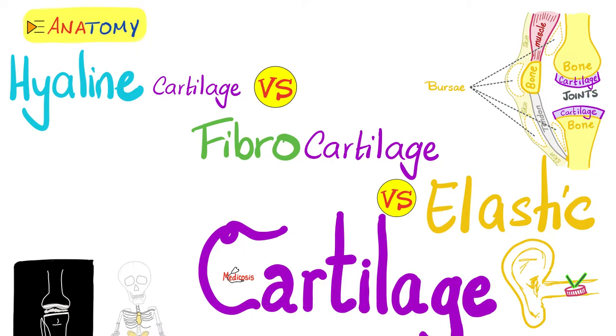As for elastic cartilage, that's the tip of your nose, the pinna of your ear, as well as the external auditory meatus. So now, let's get started.